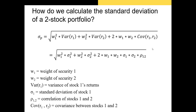For the final topic in this video, we need to go over how to calculate the variance and standard deviation of a portfolio. When you calculate the standard deviation of a two-stock portfolio, the primary formula is: take the weight of each security squared times its variance, add two times the weight of both securities times the covariance, and take the square root of that to get the standard deviation. For variance, simply remove the square root.